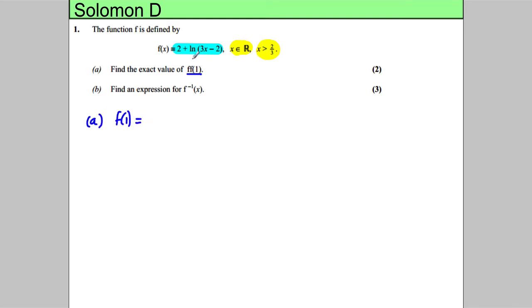I'm going to put 1 into this function, so it's 2 plus the natural logarithm of 3 times 1, which is 3, minus 2. So this is 2 plus the natural logarithm of 1. The natural logarithm of 1 is 0, so this is clearly just 2. So f(1) is 2.